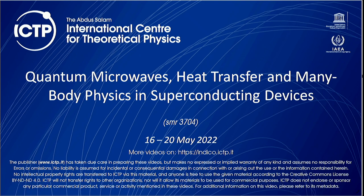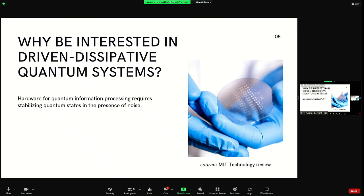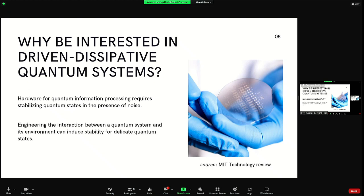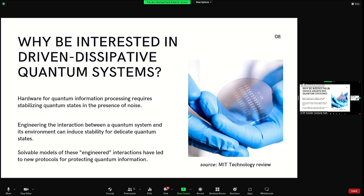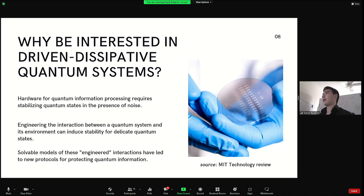Driven dissipative quantum systems. Why are we interested in driven dissipative quantum dynamics? This should have an obvious answer. There have been many protocols in the quantum information literature that call for delicate engineering of the interaction between a system and its environment — in particular, the notion that an environment can have a stabilizing effect on certain quantum manifolds of states, for example cat states. A lot of the inspiration for many autonomous quantum error correction protocols has come from work in the AMO literature, and exactly solvable models have been used as inspiration for a lot of this progress.